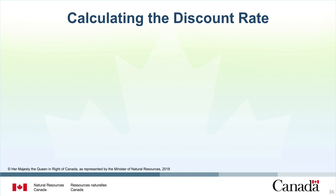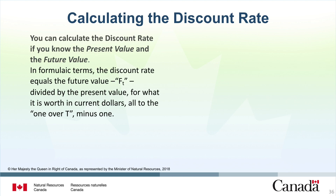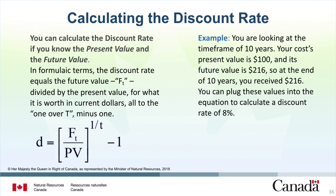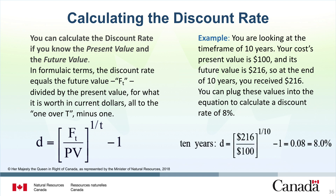Let's step through how to calculate the discount rate. You can calculate the discount rate if you know the present value and future value. In formulaic terms, the discount rate equals the future value Ft divided by the present value, all to the power of 1 over t, minus 1. As an example, assume a timeframe of 10 years. Your cost's present value is $100 and its future value is $216. Plugging these values into the equation gives a discount rate of 8%. In other words, if an item costs $100 this year and you get 8% on that value every year for the next 10 years, you will have $216 in 10 years.